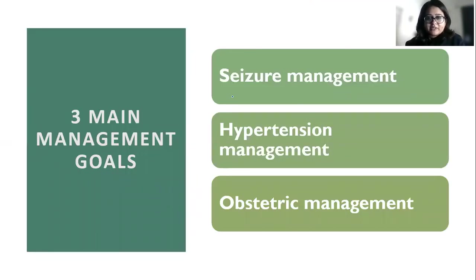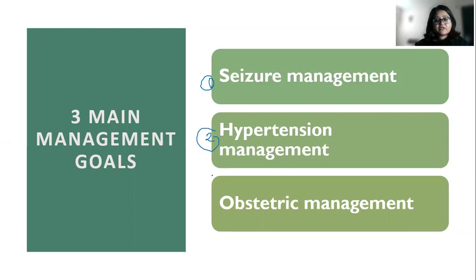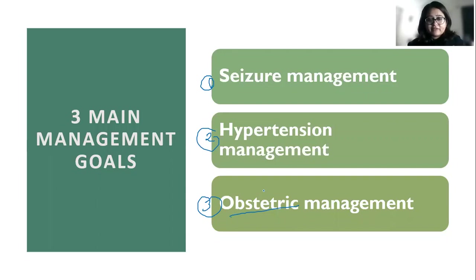When a patient comes with eclampsia, the three main headings under which management follows are: number one, seizure management — that is control of seizures and prevention of further seizures. Secondly, because the cause is preeclampsia or hypertension, we have to manage her hypertension also. And of course, the obstetric management — because once we deliver her, everything else should settle back. So the three headings are seizure management, hypertension management, and obstetric management.